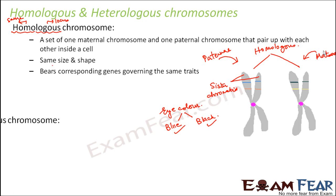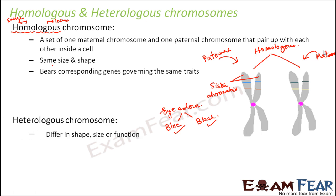Now, heterologous chromosomes will differ in shape, size, and function — they will not be related to each other. Any two random chromosomes which are not homologous chromosomes will be heterologous. They do not belong to the same pair, so there is no correlation between genes at corresponding locations.